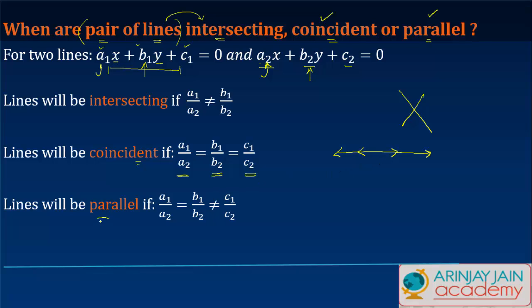They will be parallel if a1/a2 equals b1/b2 but not equal to c1/c2. So it will be something like this: the two lines will be parallel.